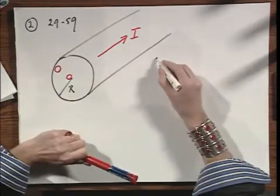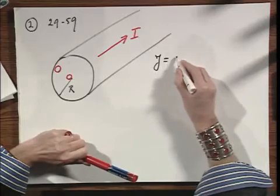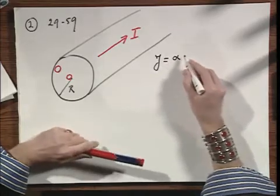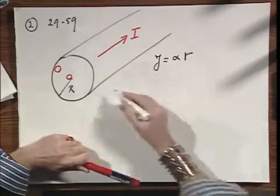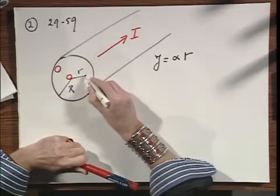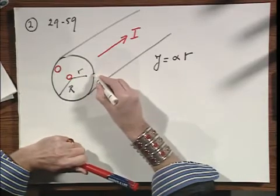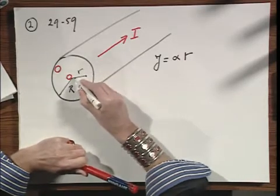And it is a linear relationship. J, which is the current density, is some constant alpha times the radius r, if this is r. So you see current density here is higher than here.